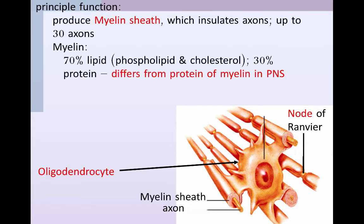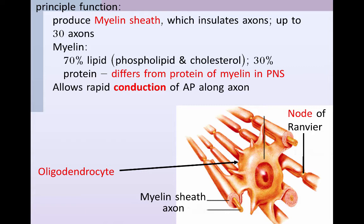Myelin is composed primarily of lipid and protein — approximately 70% lipid, most of that being phospholipid and cholesterol, and about 30% protein. The protein of the myelin in the central nervous system is actually different from the protein in myelin found in the peripheral nervous system. This myelin is very important in that it allows for rapid conduction of an action potential along an axon — in an unmyelinated axon it's conducted at about two miles per hour, while in a myelinated axon it's conducted at about 200 miles per hour.